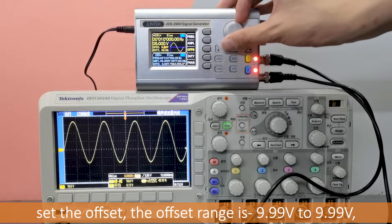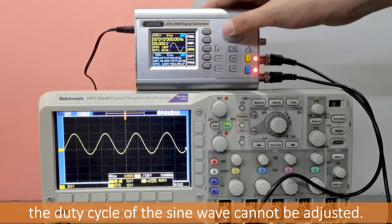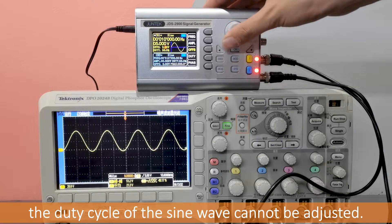When adjusting the offset, the offset range is -9.99 V to 9.99 V. The duty cycle of the sine wave cannot be adjusted.